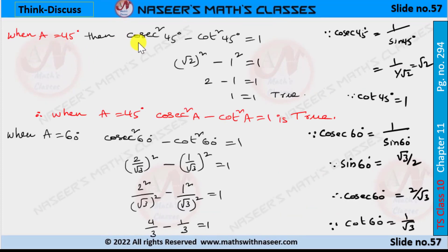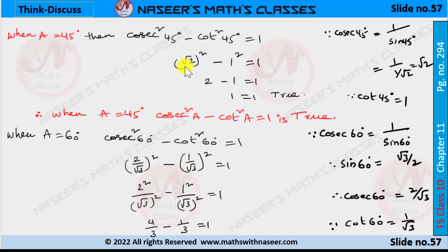When a = 45°, the identity cosec²45° − cot²45° = 1. We know cosec45° = √2 and cot45° = 1. Substituting: (√2)² − 1² = 1. Since (√2)² = 2 and 1² = 1, we get 2 − 1 = 1, therefore 1 = 1. This is true.